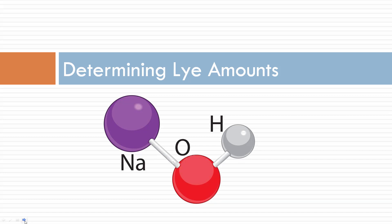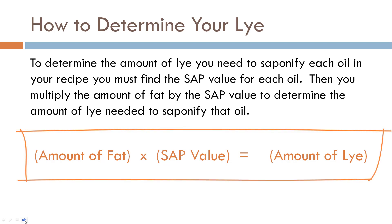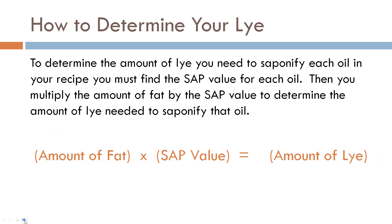So now that we've reviewed sap value and how to measure, let's talk about actually figuring out how much lye we need. To determine your lye amount, it's pretty simple: you're going to take the amount of fat for that specific oil, multiply it by the sap value, and that's going to give you how much lye you need. It's really quite simple.